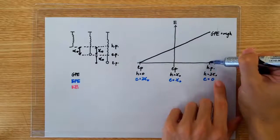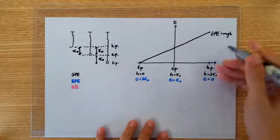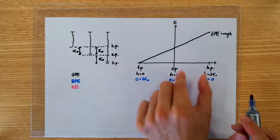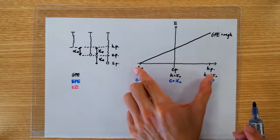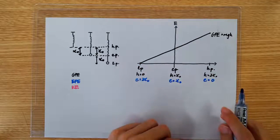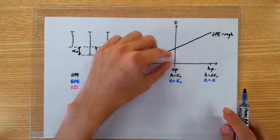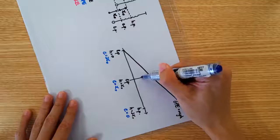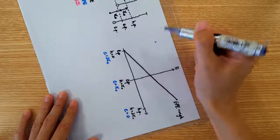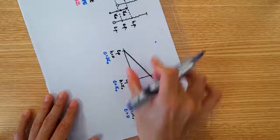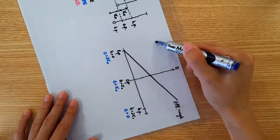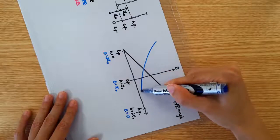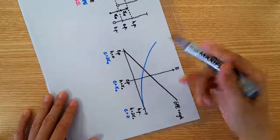So the EPE is going to start from 0 here and increase quadratically towards the lowest position. And since the extension is doubled from here to here, the elastic potential energy is going to go from one time to four times. So there's going to be a point here, a point here, and a point here where you get four times. So let me join these three points with a smooth quadratic curve.